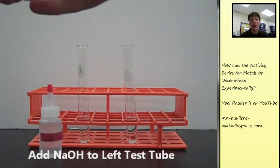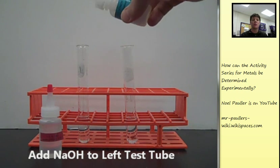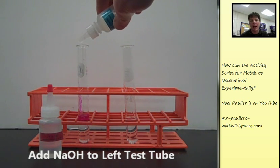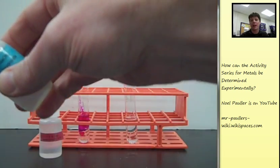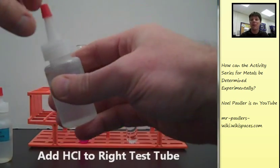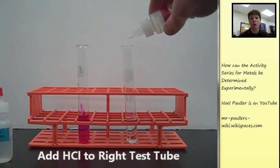We'll add some sodium hydroxide to the tube on the left first. You can see that after the sodium hydroxide has been added, we notice a definite color change. We're seeing a really bright pink color.